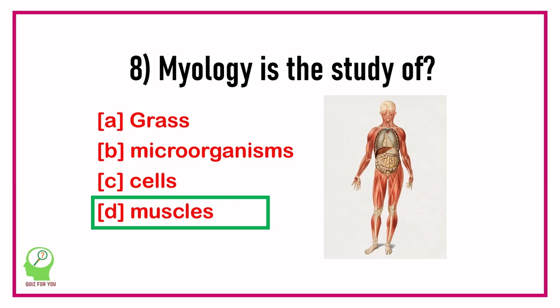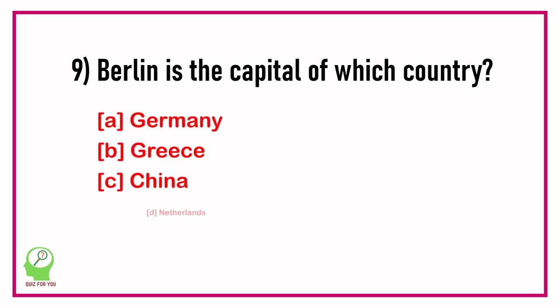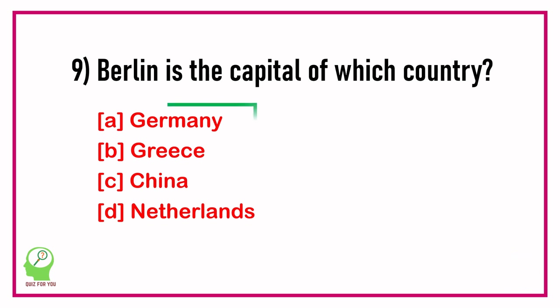Question number nine: Berlin is the capital of which country? Options are: Germany, Greece, China, Netherlands. Answer: Germany.